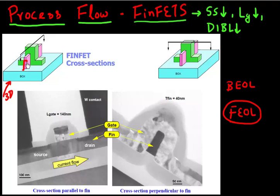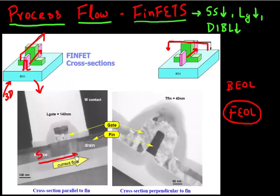For example, this is your fin. It's important to take a cross section which is parallel to your fin — in this case your fin is in this direction, so it's important to look at this cross section. And it's also important to look at a cross section which is perpendicular to the fin. If you look at the cross section parallel to the fin, you will see your source, and the fin is running in this direction. You have current conduction both on the sides of the fin and on the top of the fin. This is your drain, and this is your gate wrapping around your fin.